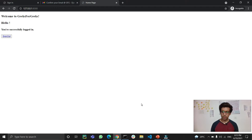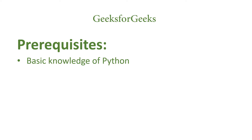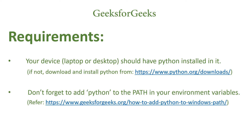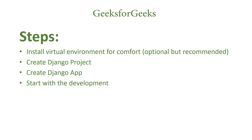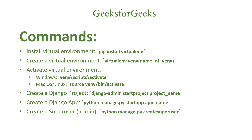The prerequisites are just basic knowledge of Python. Your device should have Python installed, available from python.org. Don't forget to add Python to the path in your environment variables. The steps we'll follow are: install a virtual environment (optional but recommended), create a Django project, create a Django app, and then start development. Here are the commands we'll use for installing, creating, and activating the virtual environment, creating a Django project and app, and creating a superuser.